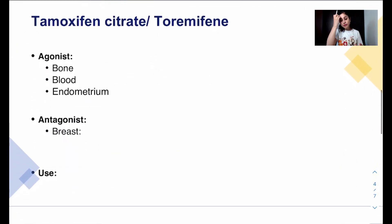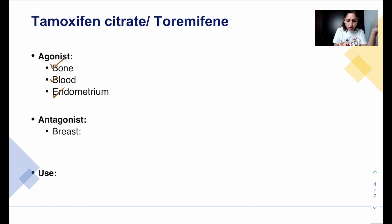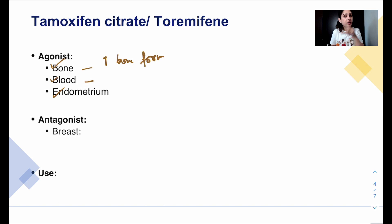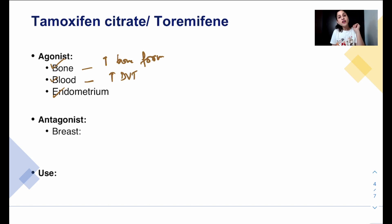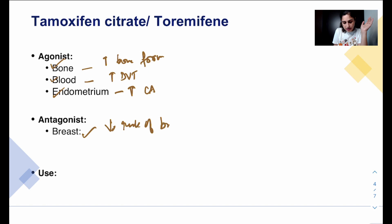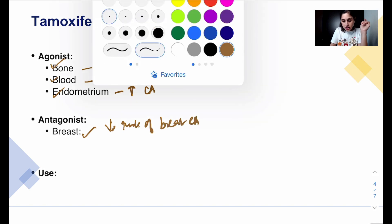Looking at tamoxifen and toremifene — they have similar effects. They are agonists on bone, which is good because it increases bone formation. They are agonists on the blood, and agonists on the endometrium, which increases chances of endometrial cancers — not ideal. They are antagonists on the breast, which is a good thing because it decreases the risk of breast cancers.